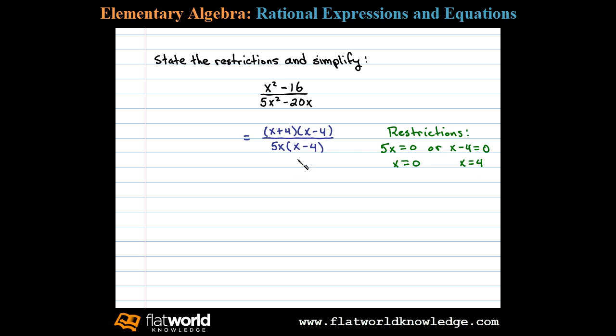These are the values that evaluate to 0 in the denominator. Once we make note of the restrictions, we can then cancel. In this case, x - 4 cancels, and we're left with (x + 4)/(5x).